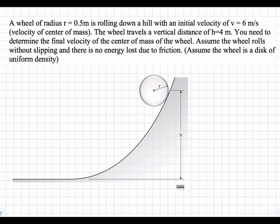In this problem, we have a wheel of radius 0.5 meters that is rolling down a hill with an initial velocity of 6 meters per second. The wheel travels a vertical distance of 4 meters, and we're asked to find the final velocity of the center of mass of the wheel.